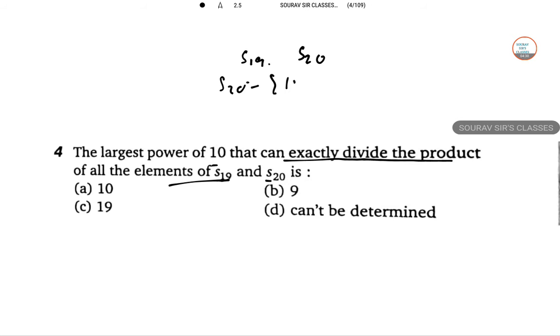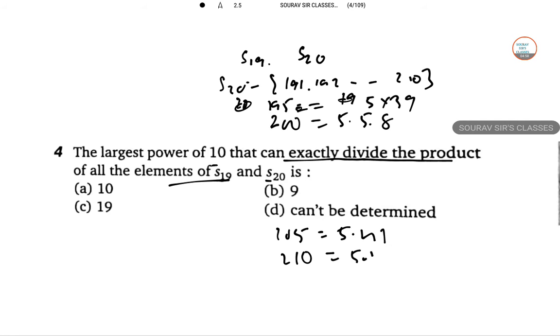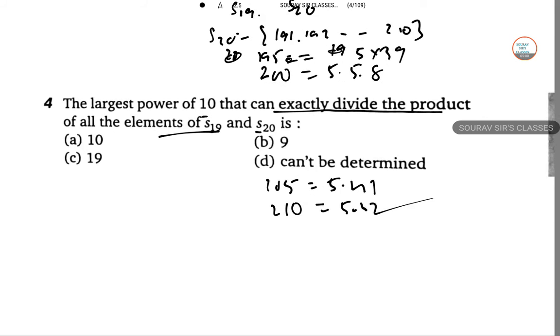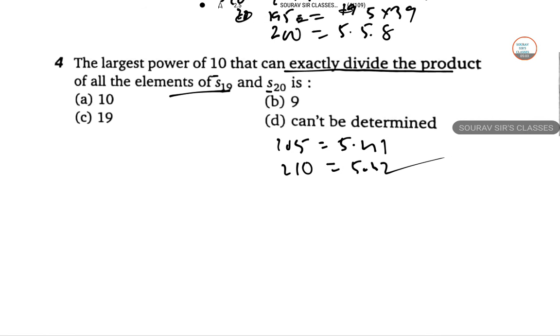So S20 is 191, 192, dot dot dot, 210. So 195 is 5 into 39, 200 is 5 into 5 into 8, 205 will be 5 into 41 and 210 is 5 into 42. So obviously number of 5s contained in the S20 is 5.